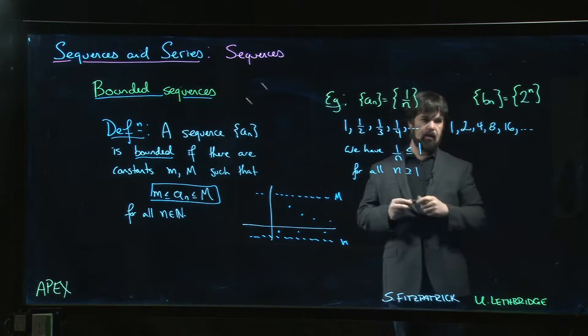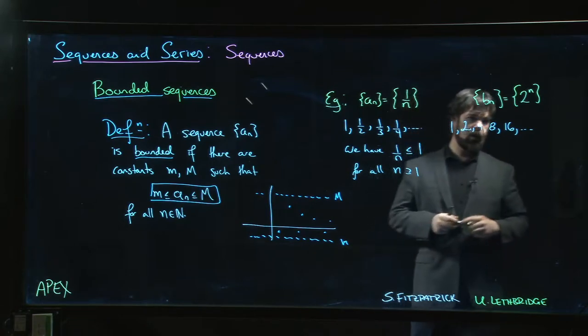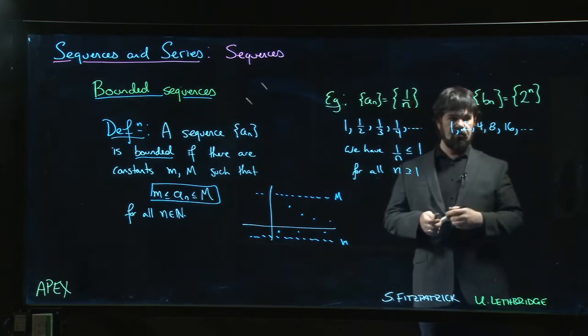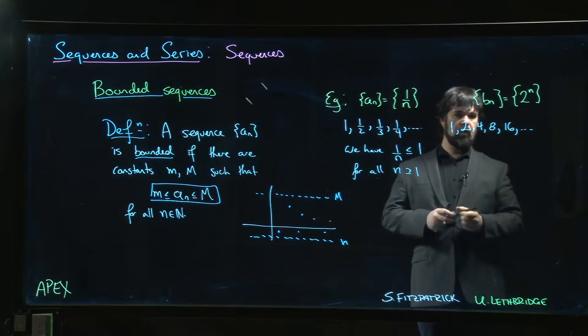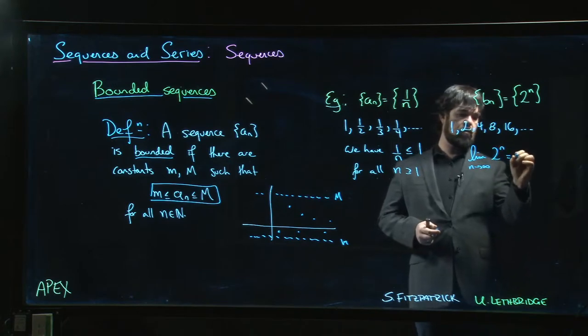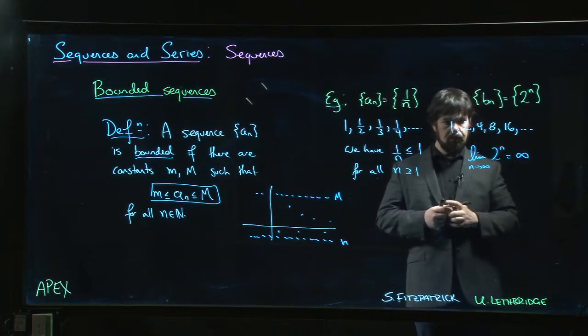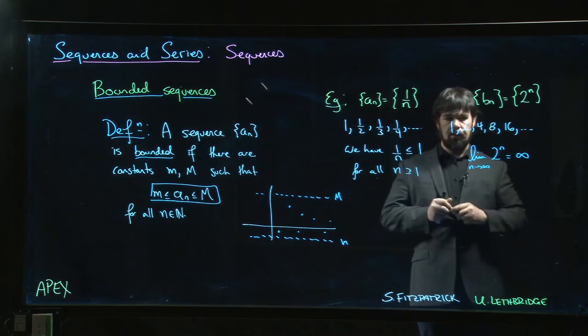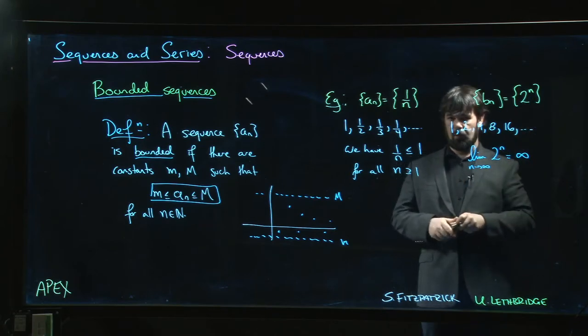These are not going to be bounded. They grow without bound, it's an exponential function. We know, in fact, we know that the limit as n goes to infinity of 2 to the n is infinite, so they can't possibly be an upper bound. These numbers grow without bound.